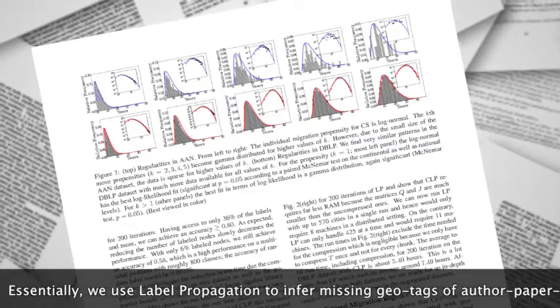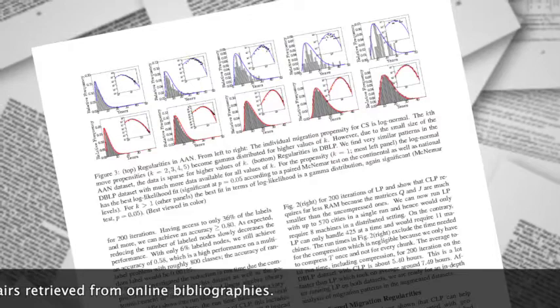Essentially, we use label propagation to infer missing geotags of author-paper pairs retrieved from online bibliographies.